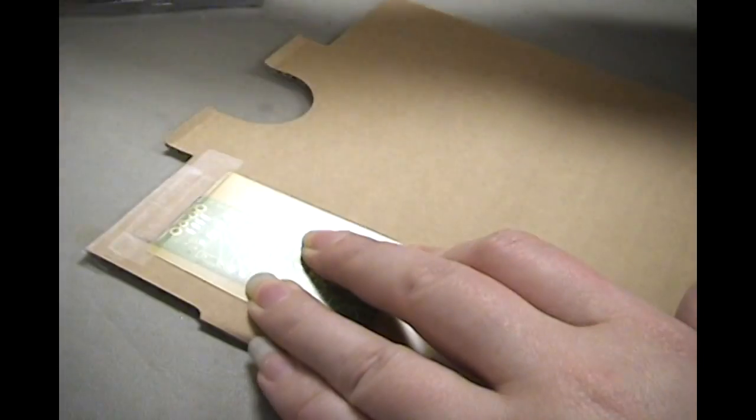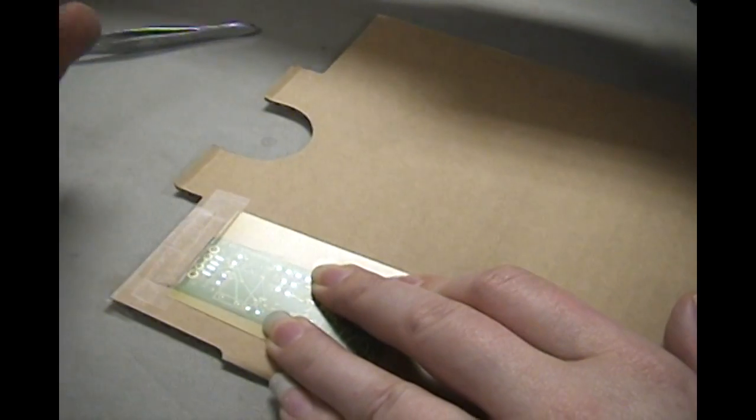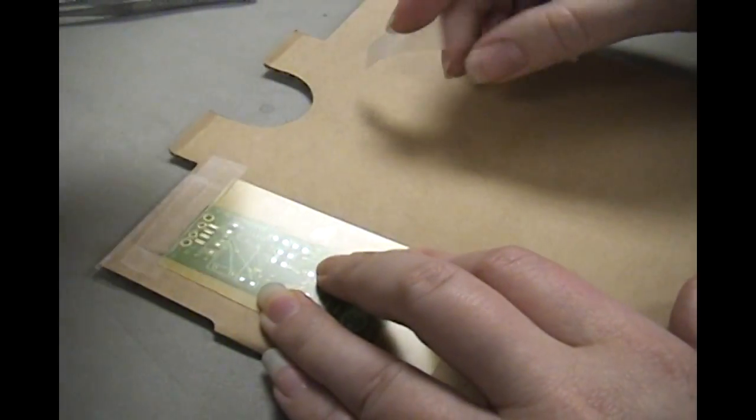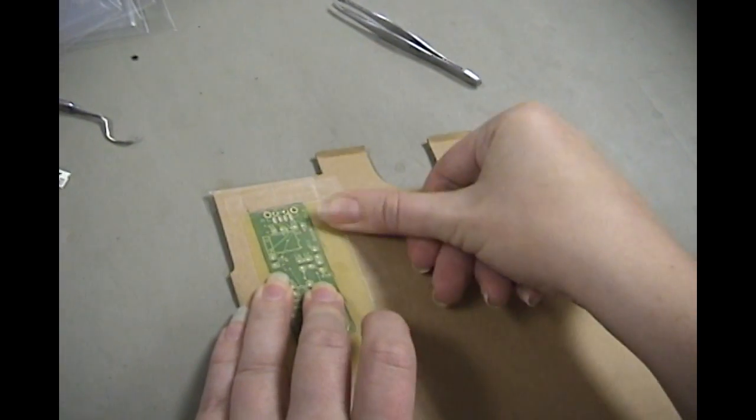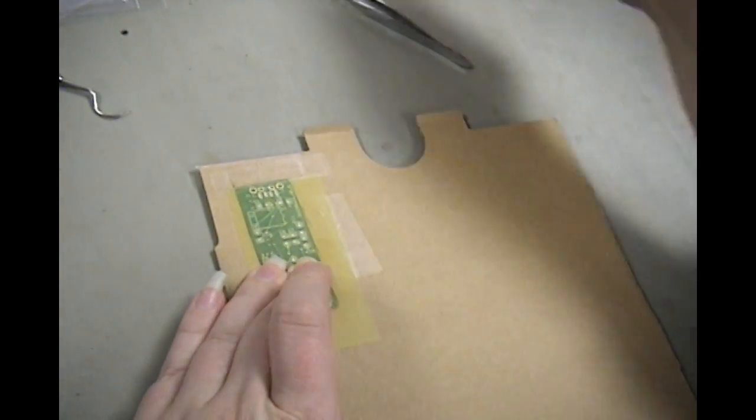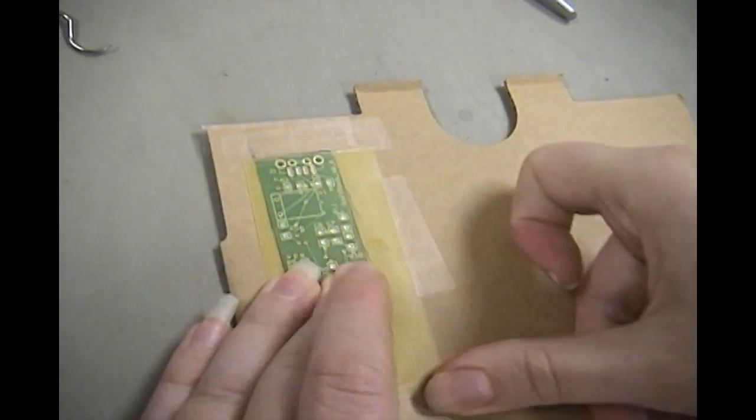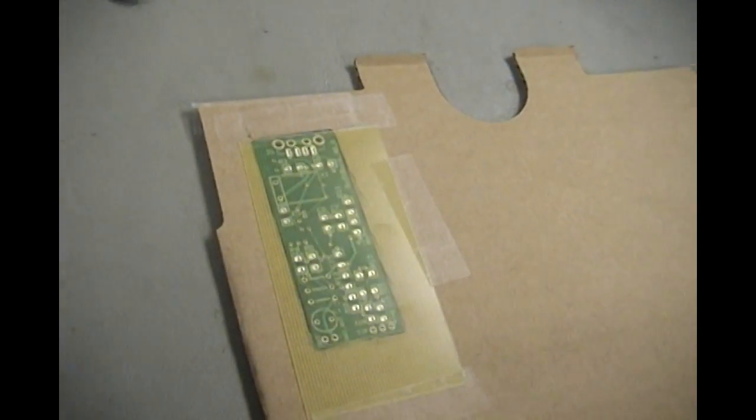Make sure that you can see the silver of the contact pads well through the small holes, like so.